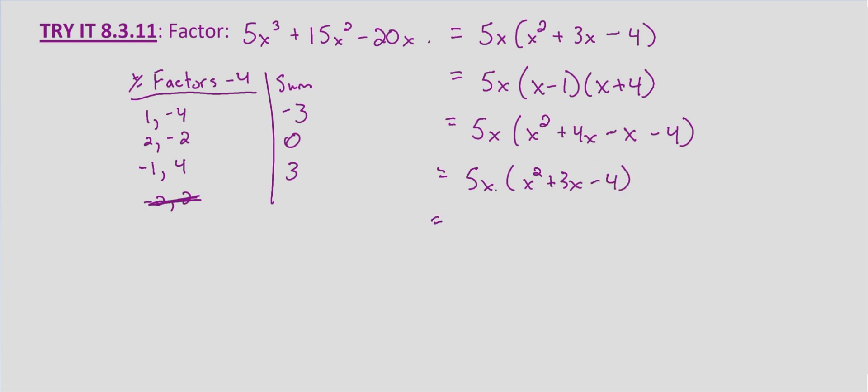And multiplying that back through, we end up with 5X cubed plus 15X squared minus 20X. Which is what we started with. So that shows us that this is the factorization of our given polynomial.